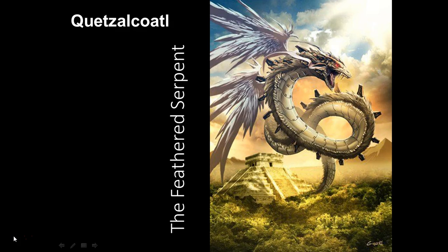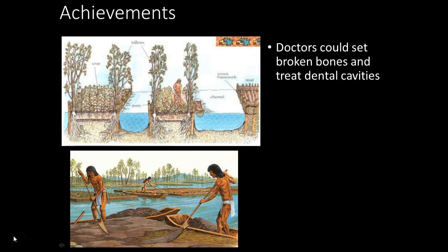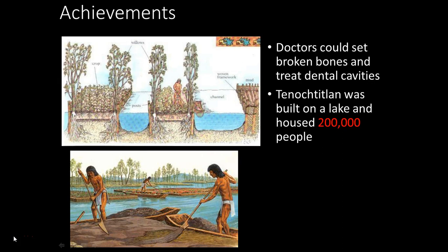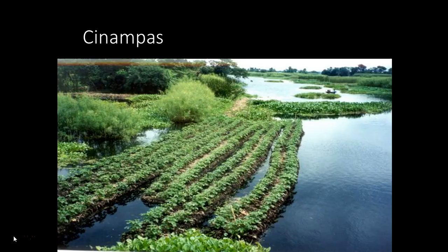The Aztecs are polytheistic, practicing human sacrifice. Their gods include Huitzilopochtli and Quetzalcoatl, the feathered serpent. Their achievements are impressive: doctors set broken bones and treat dental cavities, they have a city of 200,000 built on a lake, and they use chinampas — floating gardens — to increase food supply and master their geography.